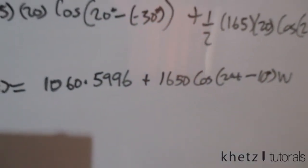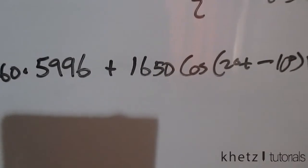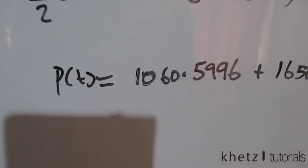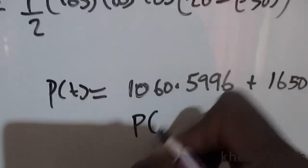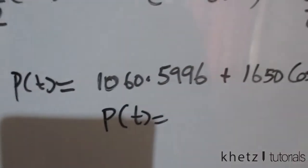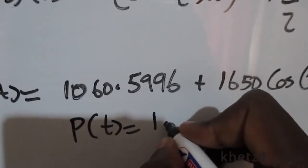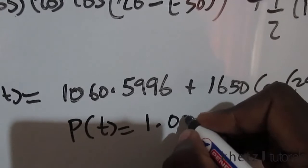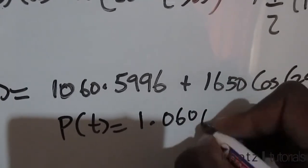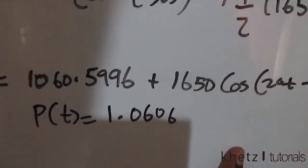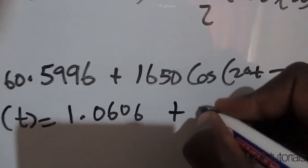You can now basically just convert this into kilowatts and to do that just basically divide all the amplitudes or all the values by 1000 which is basically the notation which is written in the textbook. So your final answer should be 1.0606.